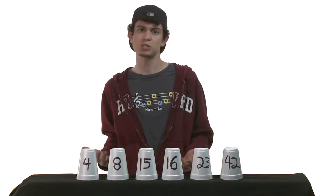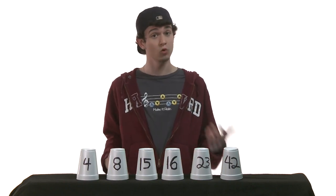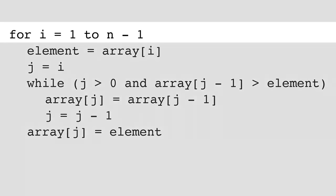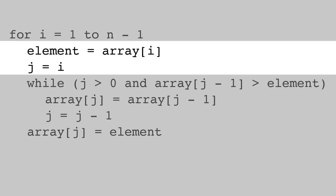So let's take a look at some pseudocode that describes the steps we just performed. On line 1, we can see that we'll need to iterate over each element in the list except the first, since the first element in the unsorted portion will simply become the first element in the sorted portion. On lines 2 and 3, we're keeping track of our current place in the unsorted portion. Element represents the number we are currently moving into the sorted portion, and j represents our index into the unsorted portion.